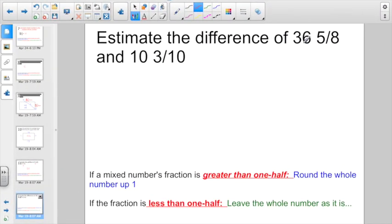Estimate the difference of 36 and 5/8 and 10 and 3/10. Well, 5/8, hopefully you know by now, that's more than a half, so I'm going to round 36 and 5/8 up to 37. 10 and 3/10. 3/10 is less than a half because half of 10 is 5. That's less than 5, so I'm just going to keep him rounded to 10. And it says you want to know the difference. That's the answer when you subtract. So I'm going to go 37 minus 10, and that's going to give us 27.